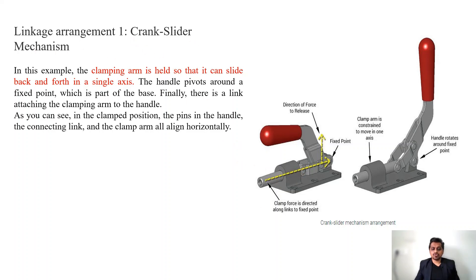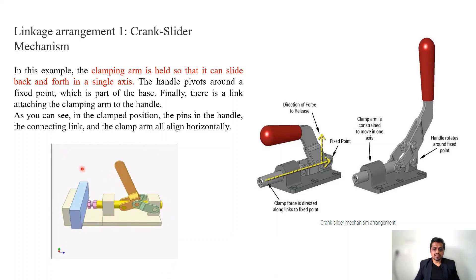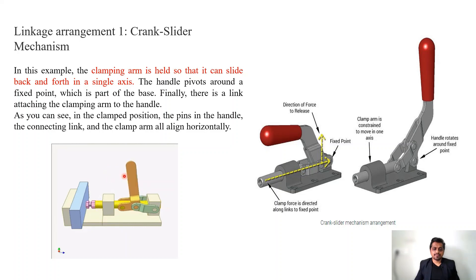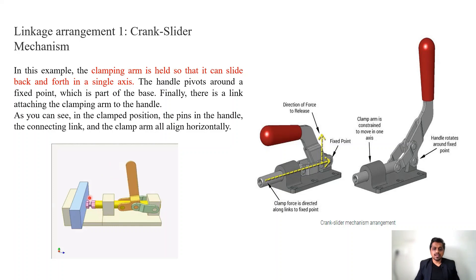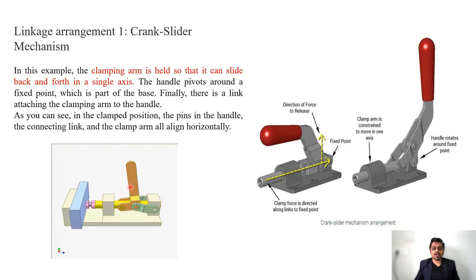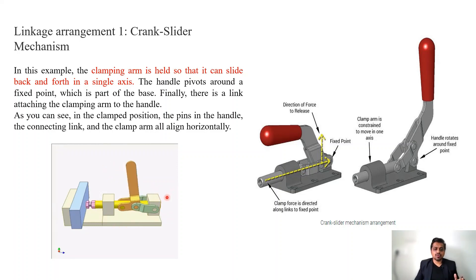Let's see how it works. The clamp is constrained to move in one direction only. When you move the linkage, it gets clamped. The action can vary — moving the handle backward or forward causes clamping depending on the linkage arrangement. The main thing is that the action is horizontal and the force being applied is horizontal.